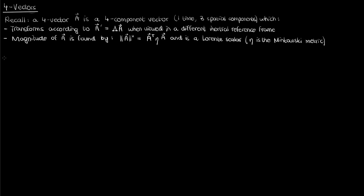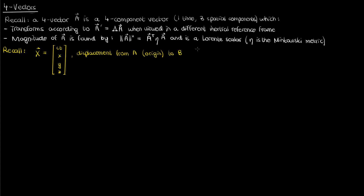They do not change in different inertial reference frames. We described in the last video how the displacement vector capital X, which represents the displacement from an event A at the space-time origin to an event B at some arbitrary space-time location, is a four vector. Now the question becomes: if we can formulate a four vector version of displacement, can we also formulate a four vector version of its derivatives like velocity and acceleration?